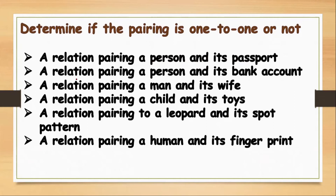Next: a relation pairing a person and their bank account. Can a person have multiple bank accounts? Yes, because you can open a bank account from different banks. So this cannot be considered a one-to-one function.